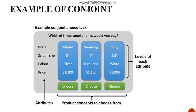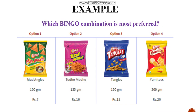Now let us understand what is meant by attributes and levels. Taking the example of smartphones, the question asked would be: which of these smartphones would you buy? For instance, an iPhone with a 5-inch screen, silver color, priced at $1,200. Attributes are brand, screen size, color, and price. Levels are the specific values under each attribute — for screen size: 5, 5.5, or 6 inches; for color: silver, turquoise, or white.